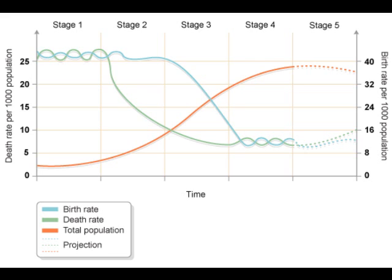Stage four is Low Stationary: the birth rate is low, the death rate is low, and there is a stable natural increase or still a very small increase. The birth rate stays low because women are more educated in contraception and there is better sanitation, so there are no or very few infant deaths. The death rate remains fairly low because of continued investments in sanitation and healthcare.